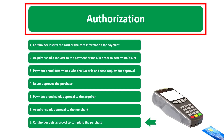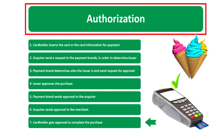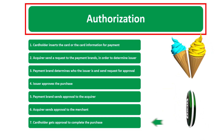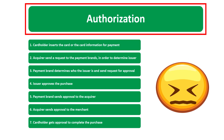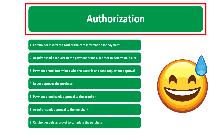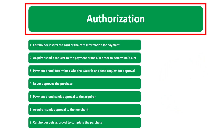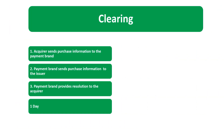Step number seven: the cardholder gets approval to complete the purchase. Basically the merchant says you are good to go — here is your ice cream and your receipt. I recommend watching this video a couple of times. This is likely one of the topics you could find on a PCI exam, whether ISA, QSA, or PCI.